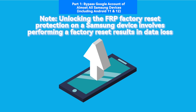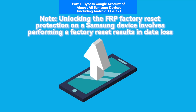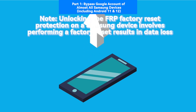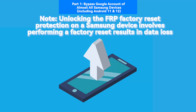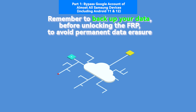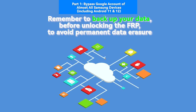Note: Unlocking the FRP on a Samsung device involves performing a factory reset, resulting in data loss. Remember to back up your data before unlocking the FRP to avoid permanent data erasure.